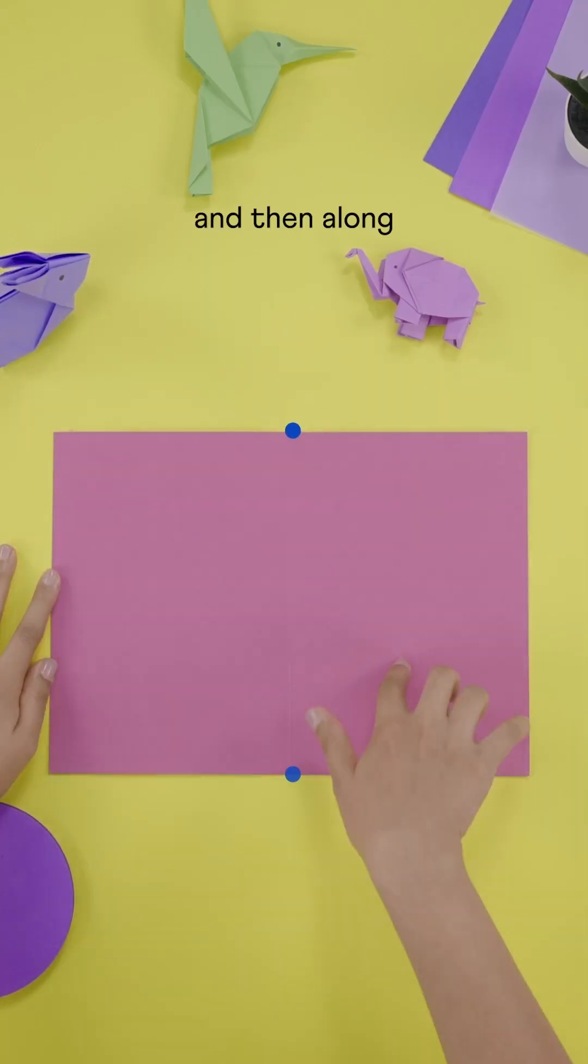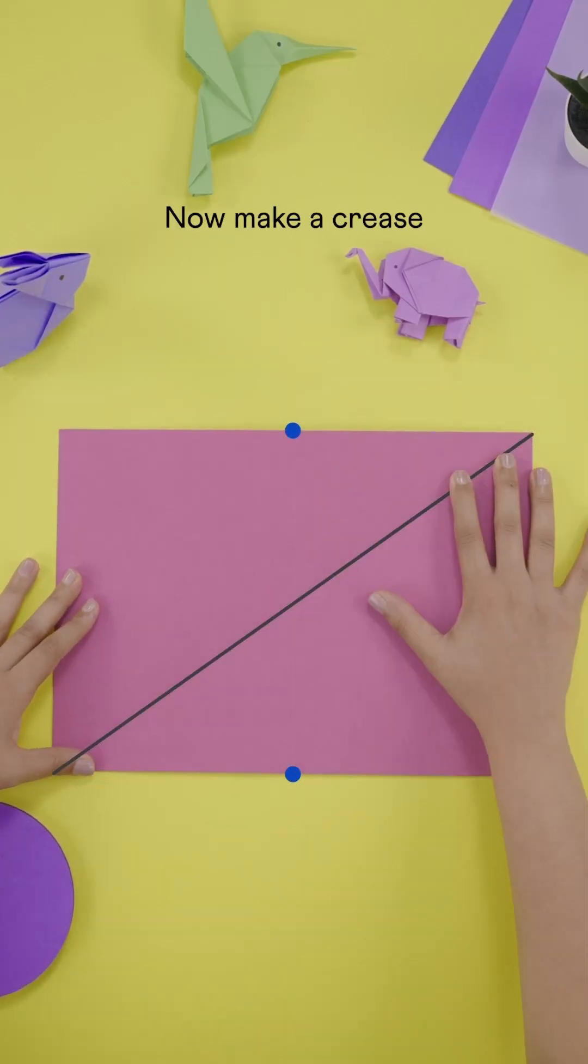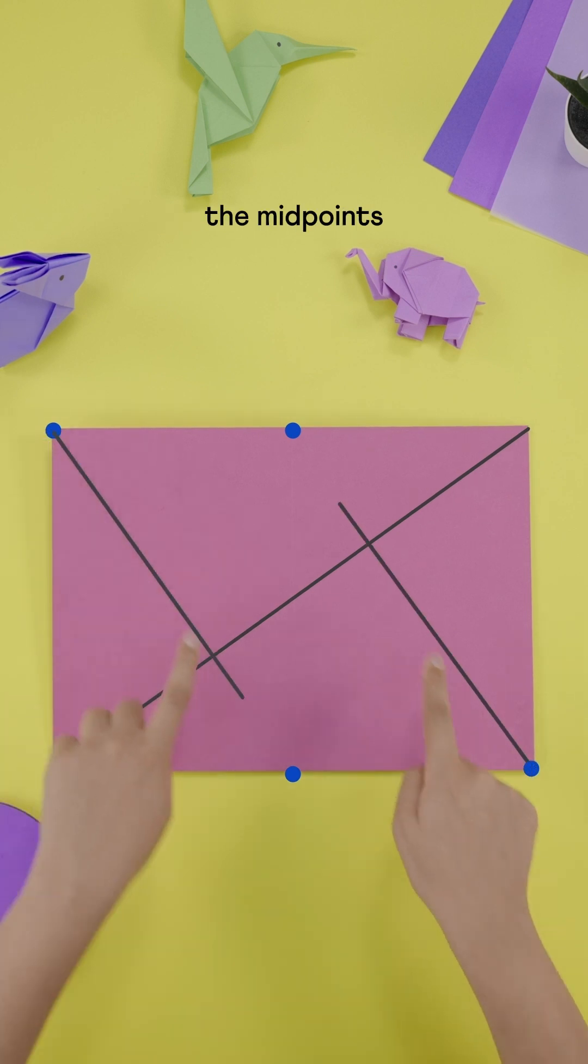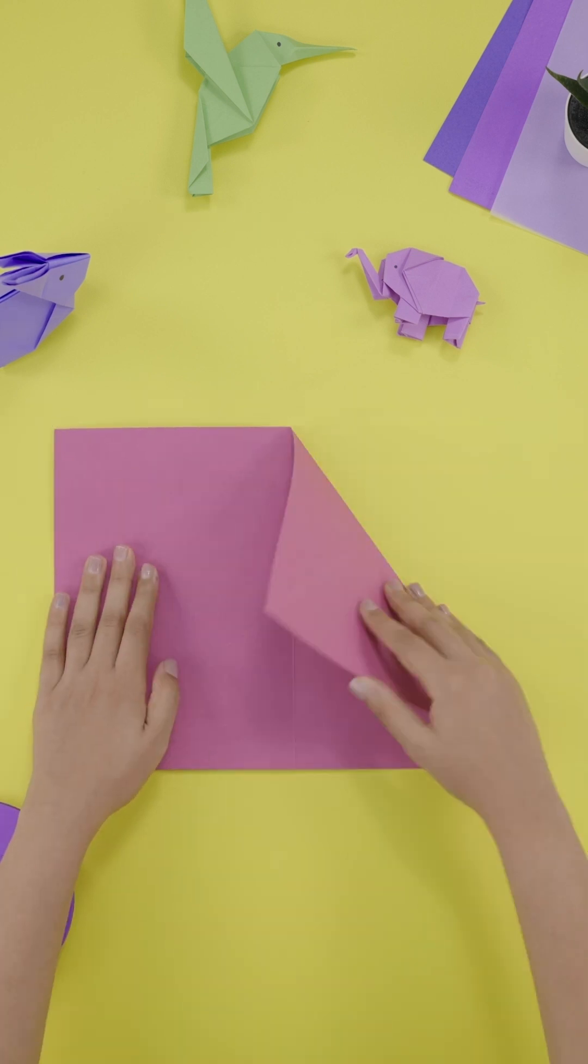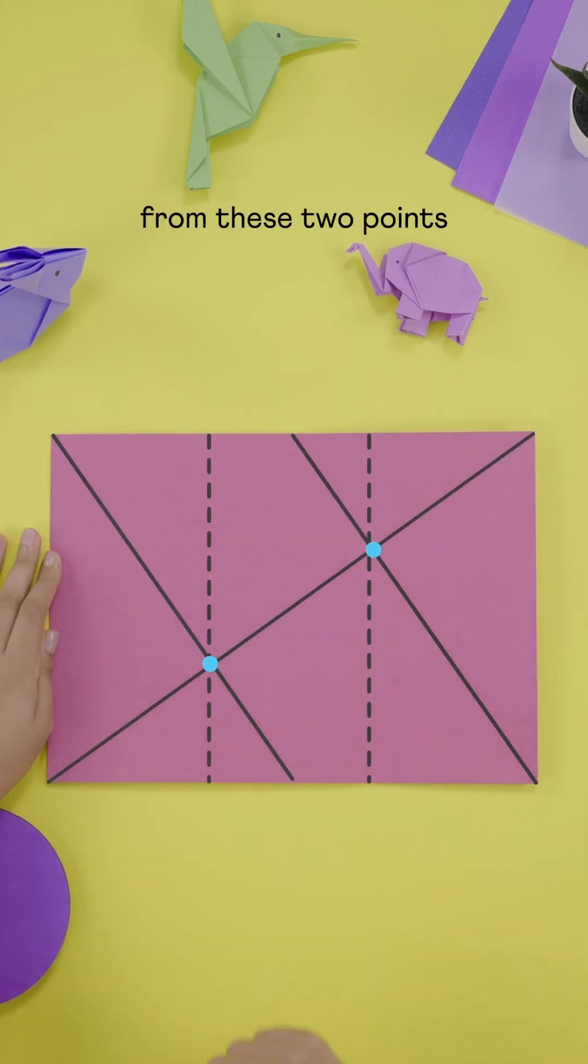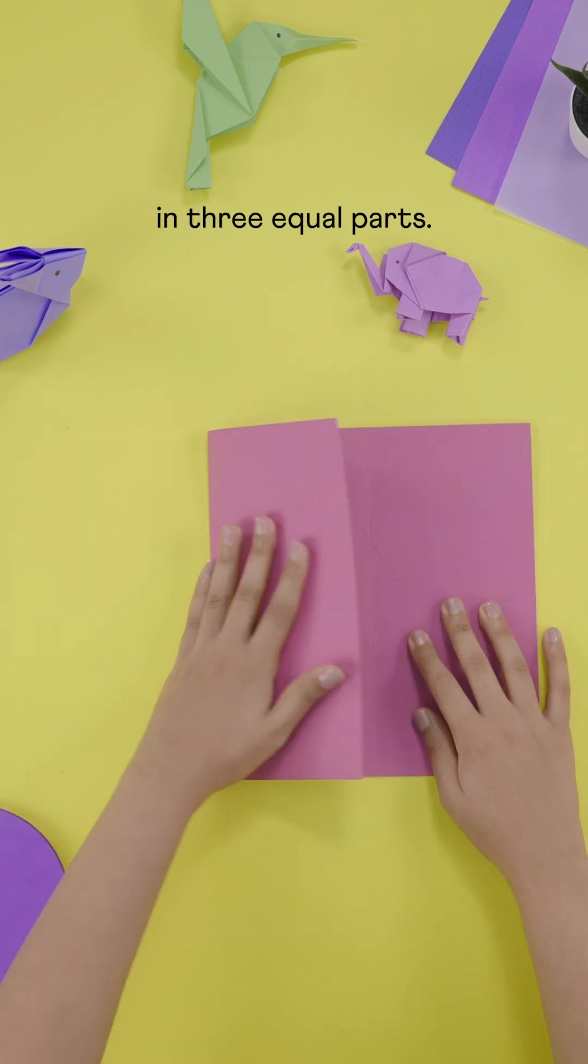Fold in half and then along the diagonal. Now make a crease joining the other two vertices to the midpoints of the opposite sides. Lines passing from these two points divide the paper in three equal parts.